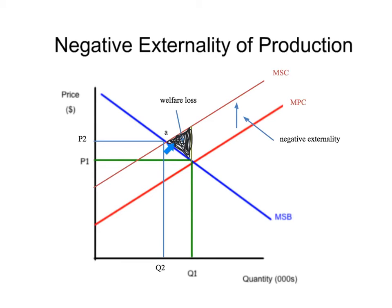There is a misallocation of society's resources — too much paint is being produced relative to what would be best for society. Optimally, Q2 would be produced. But the private paint company doesn't account for that and continues to produce at Q1. Therefore, there's a new concept called welfare loss, also known as deadweight loss — an extra cost to society, a loss of welfare, as a result of the production of paint.